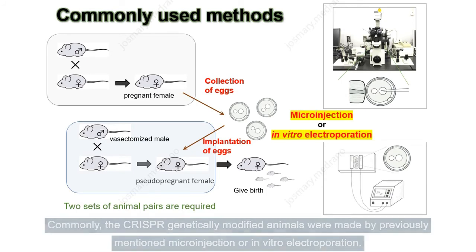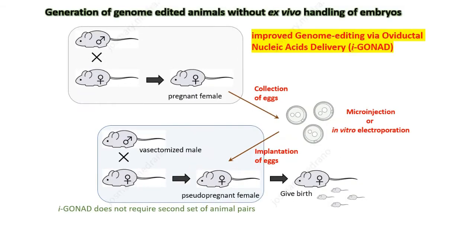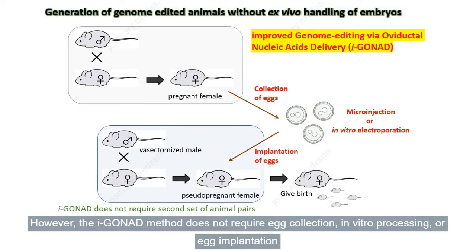Commonly, CRISPR genetically modified animals were made by previously mentioned microinjection or in vitro electroporation. Both of these methods require in vitro introduction of the genetic modification agents as well as two animal pairs. However, the I-Gonad method does not require egg collection, in vitro processing, or egg implantation — so these steps can be completely skipped.